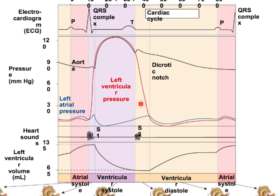The S2 sound is the aortic valve closing. So S1 is the AV valves closing — the lub — and S2 is the aortic valve closing — the dub. The T wave is the repolarization of the ventricles, corresponding to isovolumic relaxation and passive filling.